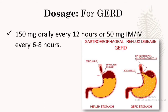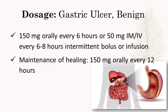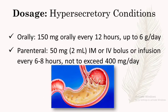Dose in several conditions: for GERD, 150 mg orally every 12 hours or 50 mg intramuscular or intravenous every 6 to 8 hours. Dose for gastric ulcer is 150 mg orally every 6 hours or 50 mg IM or IV every 6 to 8 hours intermittent bolus or infusion. Maintenance healing dose is 150 mg orally every 12 hours. Dose for hypersecretory conditions is 150 mg orally every 12 hours up to 6 grams per day, and parenterally 50 mg IM or IV bolus or infusion every 6 to 8 hours, not to exceed 400 mg per day.